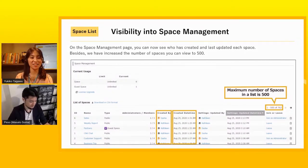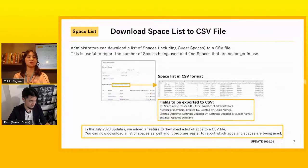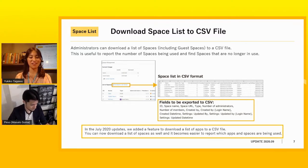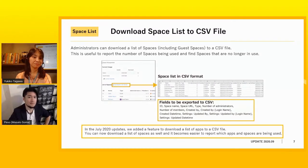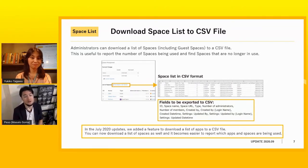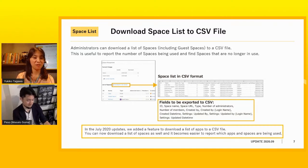This is also about the space list. Now we can download the space list to a CSV file. We already added an update in July to be able to download the list of apps as a CSV file. This update does the same for the space list. The concept is the same — to make it easier for the manager or administrator to manage the spaces created inside your domain. Okay, thank you. So let's move on to the next.